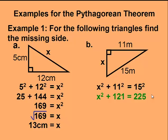We want to isolate the x or the x squared, so we must subtract 121 from both sides, leaving us with x squared equals 104. To solve for x, we take the square root of both sides,